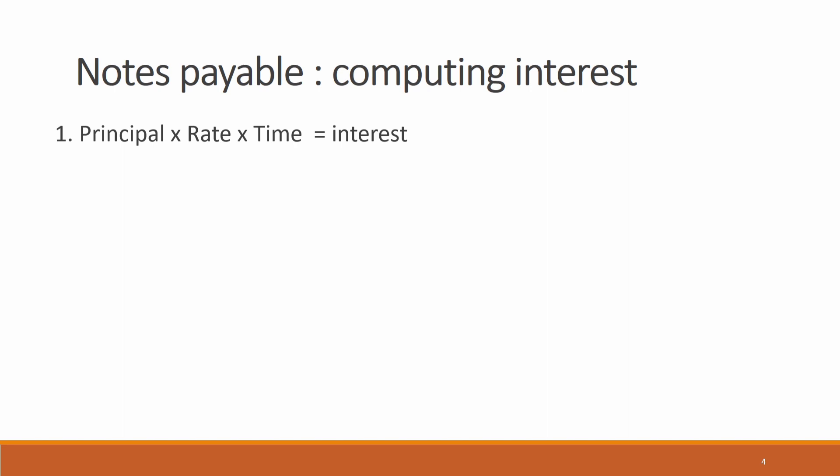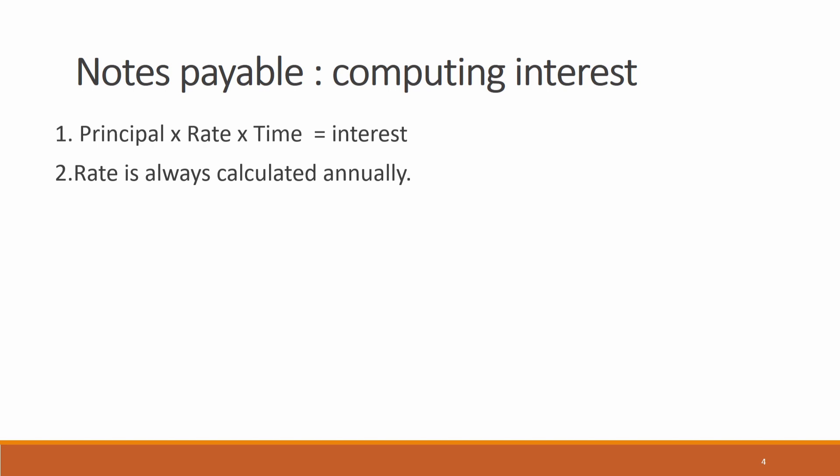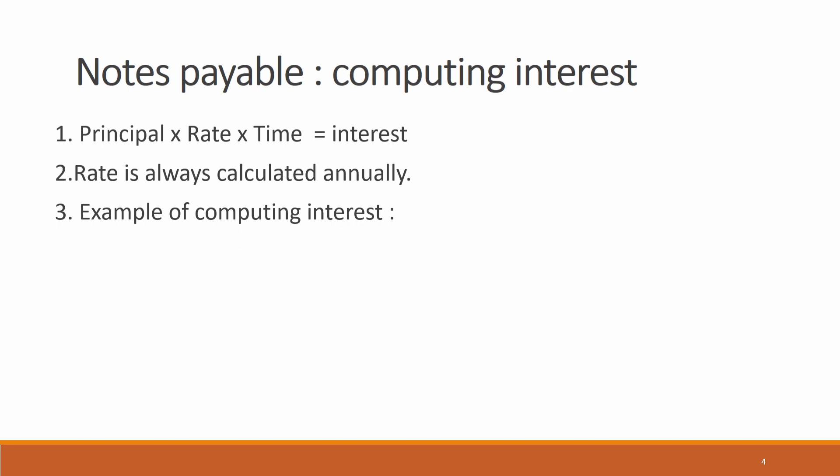The formula is: Principal × Rate × Time = Interest. The rate is always calculated annually.